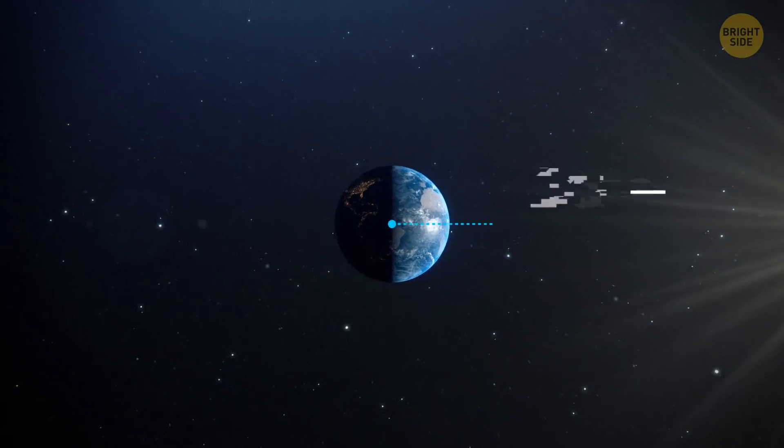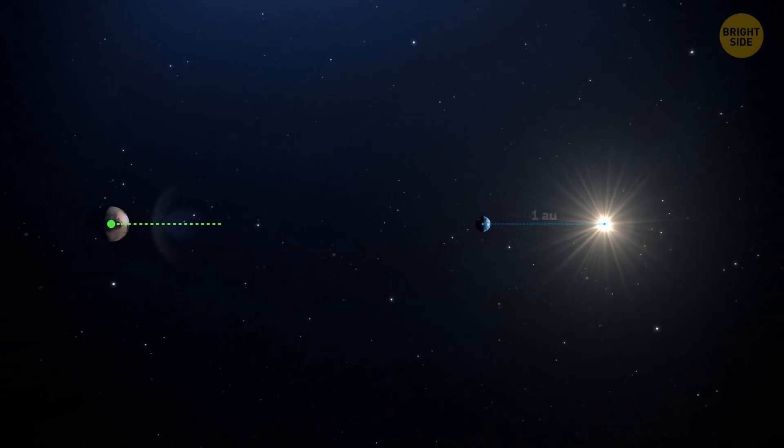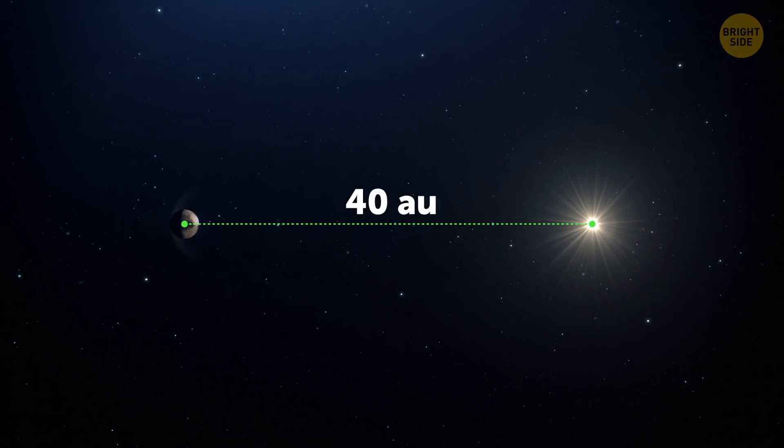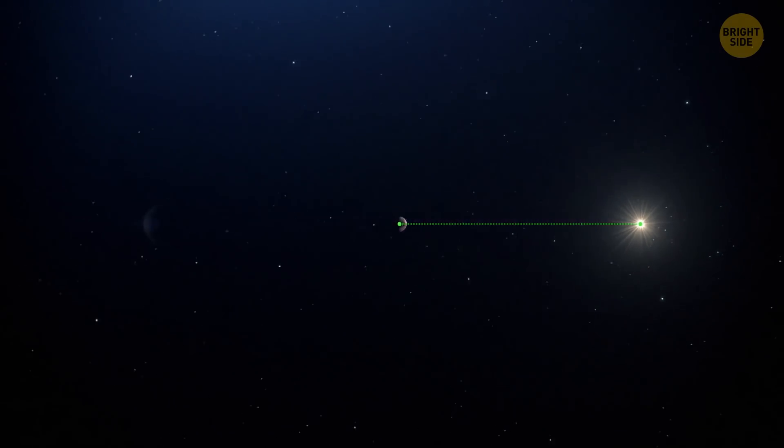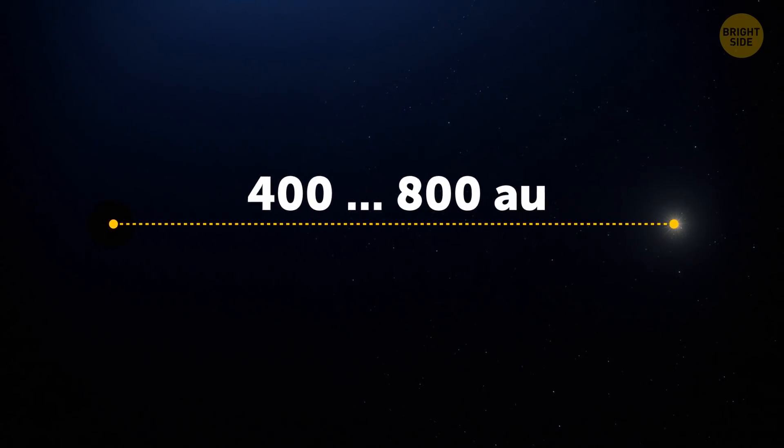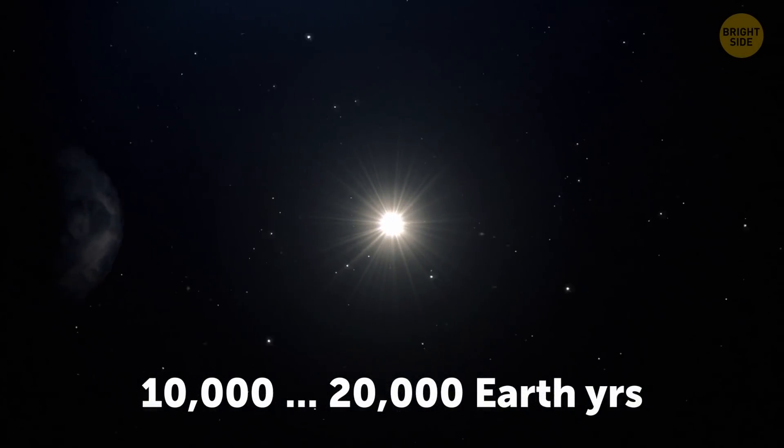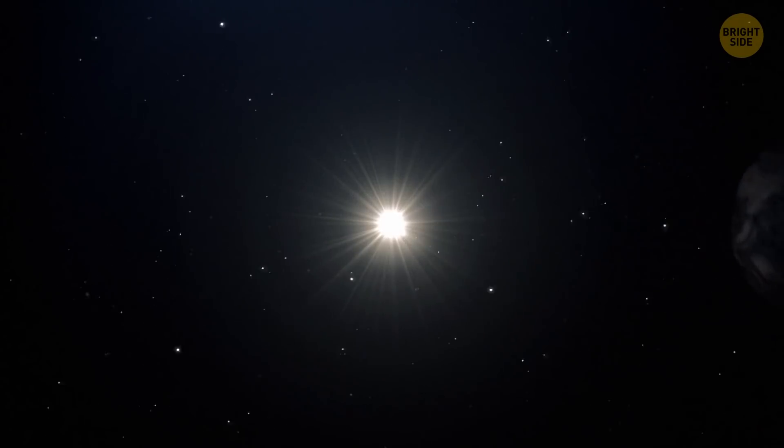The astronomical unit equals the distance between our planet and the Sun. Pluto is approximately 40 astronomical units from the Sun. But Planet 9, if it exists, is 400 to 800 astronomical units away. It would take 10,000 to 20,000 Earth years for this mysterious planet to make a single circle around the Sun.